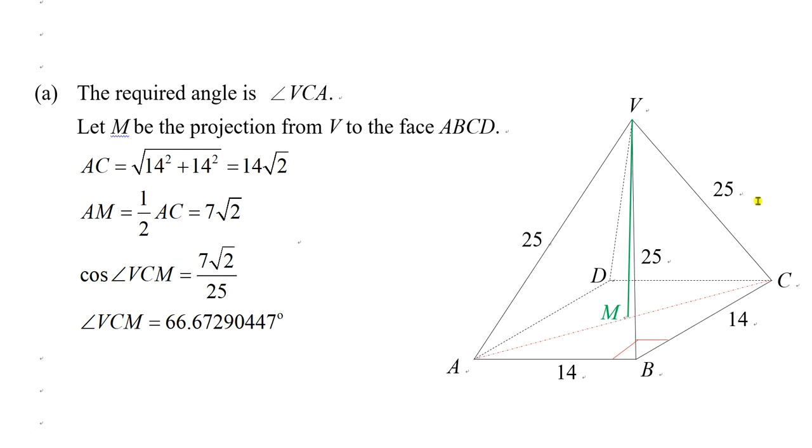We join AC and then draw a point M, which is the projection from V to the base ABCD. Actually, the required angle is VCA or VCM. First of all, we find the length of AC using Pythagoras theorem, which is 14 times square root 2.